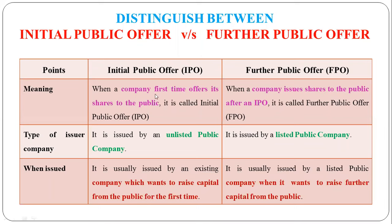When the company first time sells its shares to the public, we call it Initial Public Offer, that means IPO. And after the IPO, when the company issues shares again in the market, it is FPO, that means Further Public Offer.